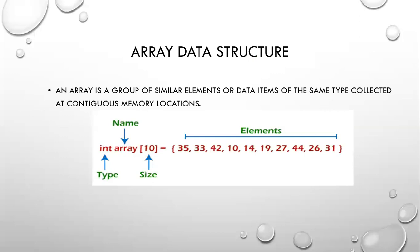What is Array Data Structure? An array is a group of similar elements or data items of the same type. Here 'int' is the data type, 'Array' is the name of the array, and 10 is the size of the array. These are the array elements: 35, 33, 42.